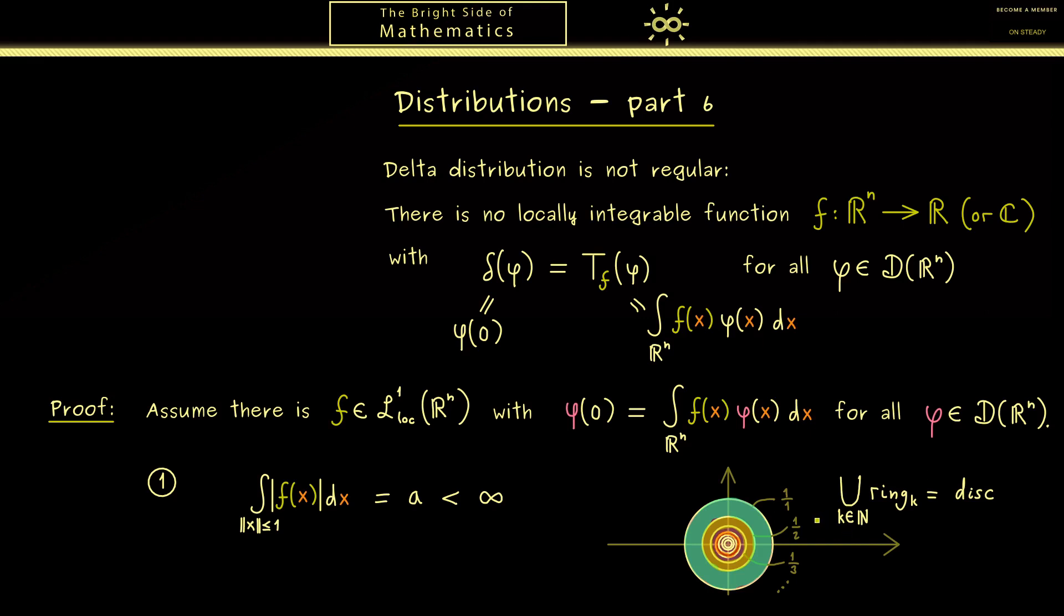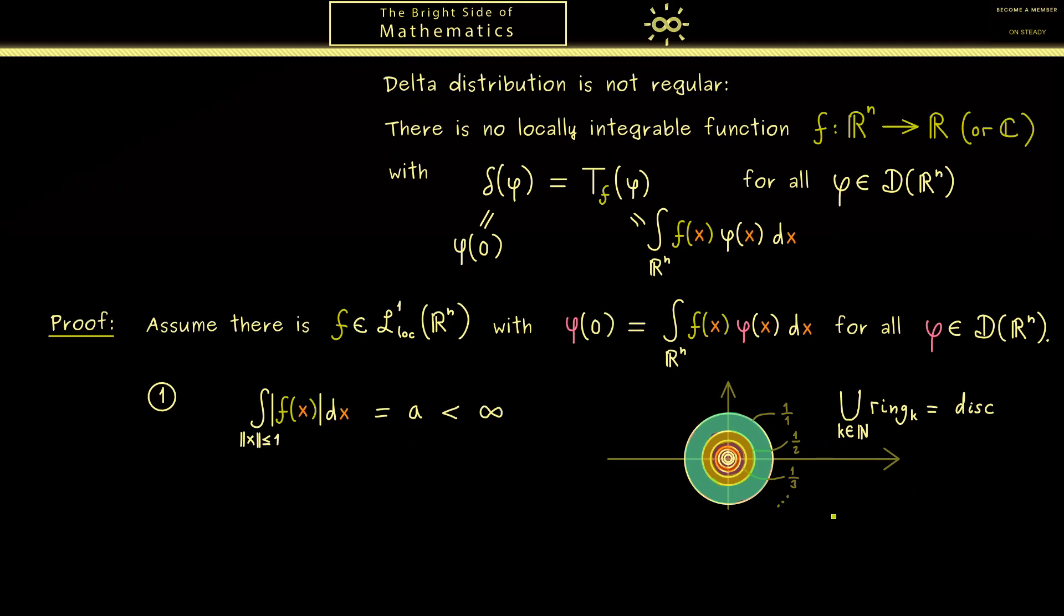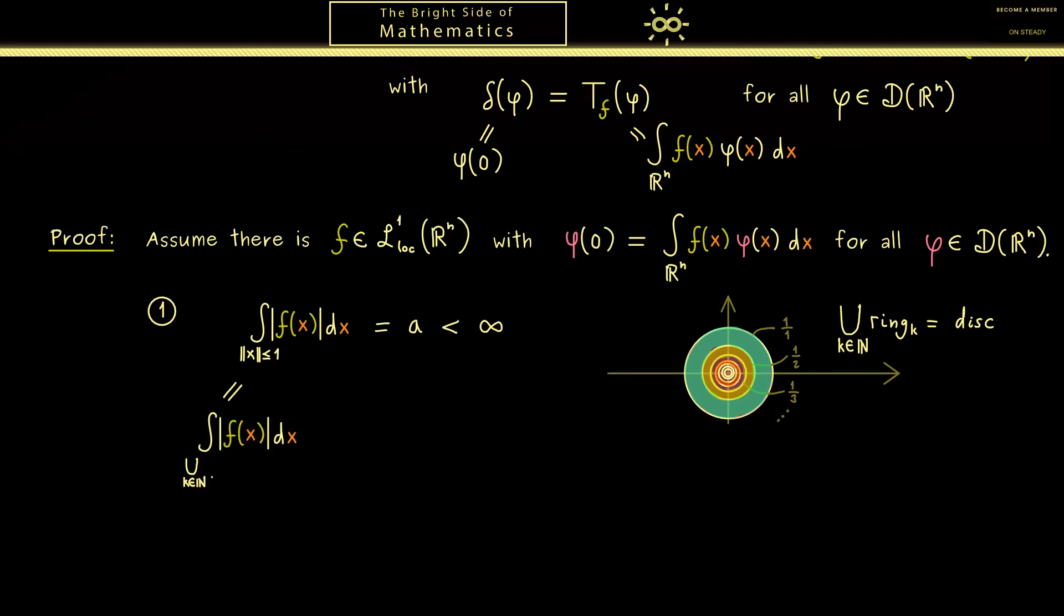Okay I don't think we need to formalize this even more because the idea should be clear. The important thing we get is that here at the integral we have a countable union. And now when you know some measure theory or integration theory you immediately know what to do because here we have a disjoint union.